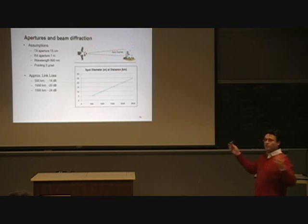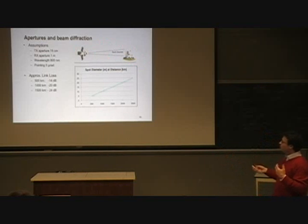At the receiver, we will just have a certain spot diameter. And this has to be tuned in such a way that we can work in the regime of losses where we can still handle. For instance, if we think of having a 15 centimeter telescope up there, and a one meter telescope on the ground, roughly,